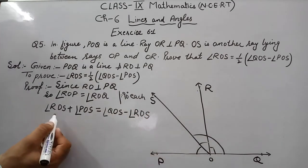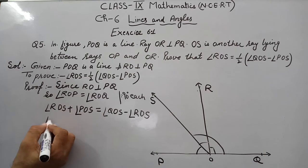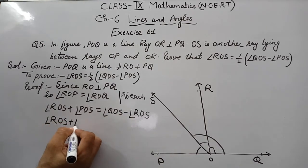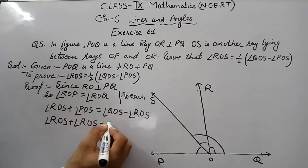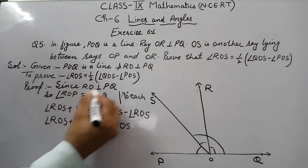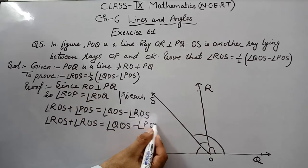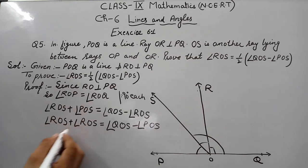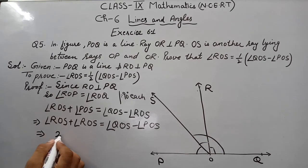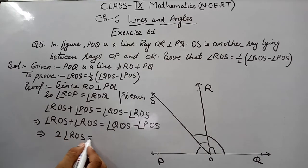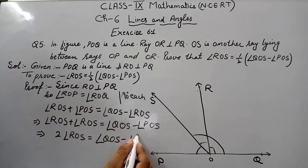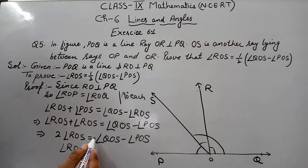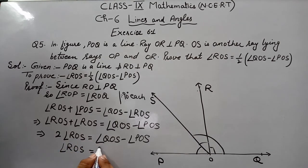So bring this ROS to this side, so it will become plus ROS. So it becomes ROS plus ROS is equal to QOS, and this will become on this side minus angle POS. So 2 times ROS is equal to QOS minus angle POS. So ROS is equal to, this 2 will be here divided, so it will become 1/2 into (QOS minus angle POS), as proved.